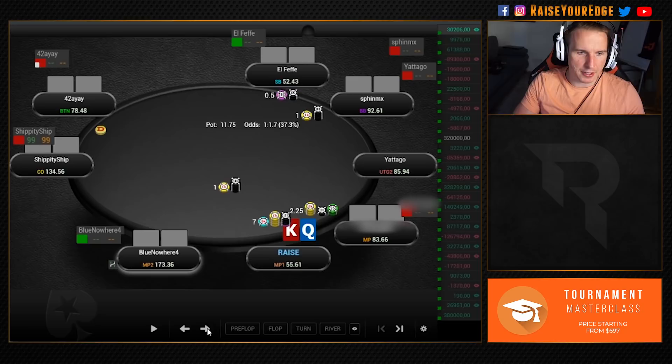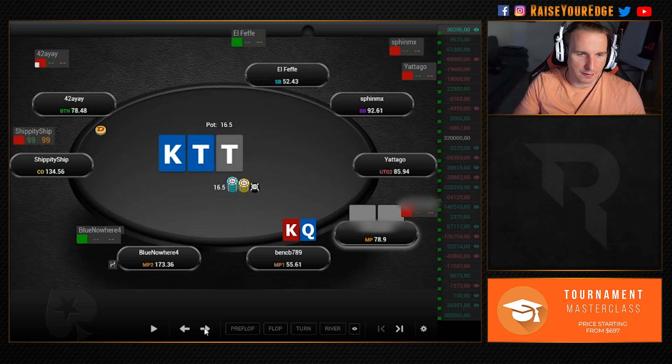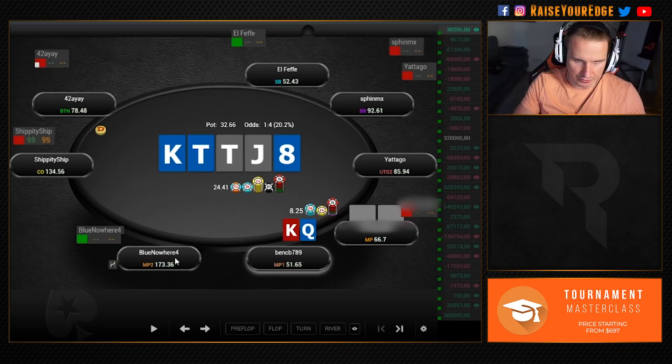Let's just jump right into it. We have this spot here where a villain under the gun opens. I opted to 3-bet and he calls. Flop comes King-10-10. We're around 60 big blinds deep. I C-bet, he calls, we check the turn.